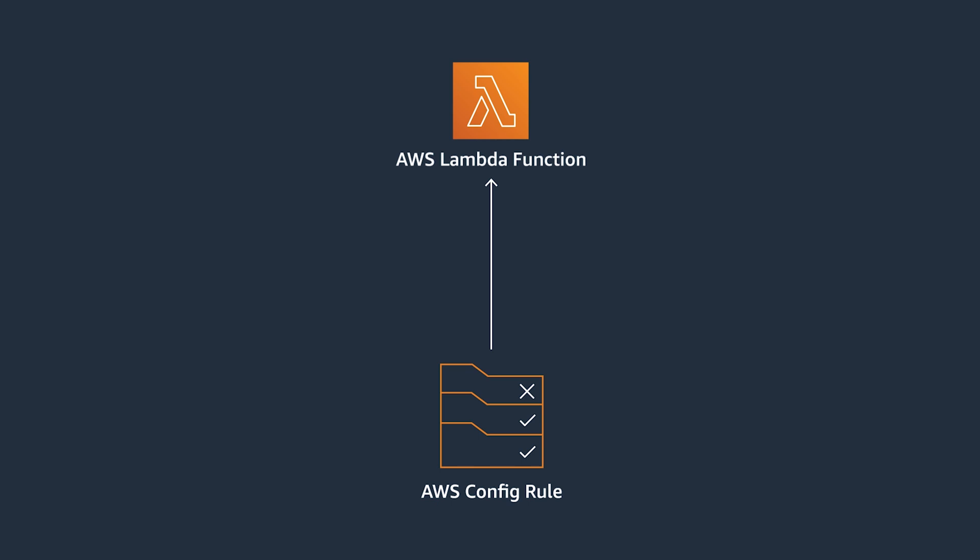For example, let's say I want to build and author my own rule that ensures that all of my EBS volumes are next-generation GP3 volumes. Right now, that rule isn't managed or created by AWS, so I would need to build a custom Config rule for that.